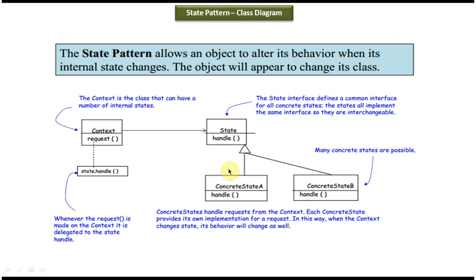This is the class diagram of the state design pattern. Here you can see the interface 'State', which has a 'handle' method that is an abstract method. Below that you can see ConcreteStateA and ConcreteStateB — both are concrete classes that implement the State interface and provide an implementation of the handle method.